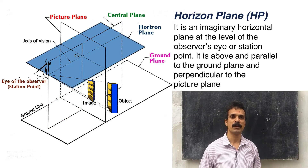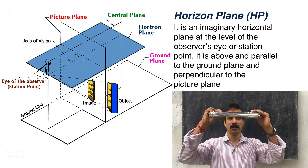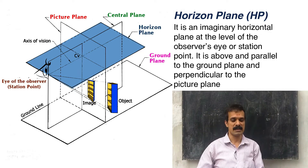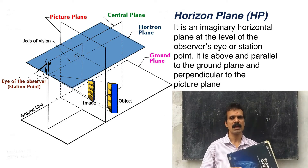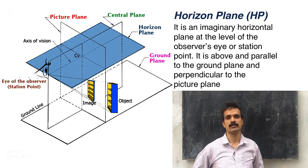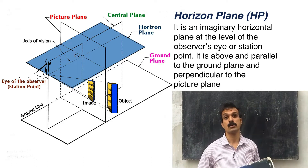There is one more plane. That plane is parallel to the ground plane and passes through the eye of the observer. It is known as the horizon plane.